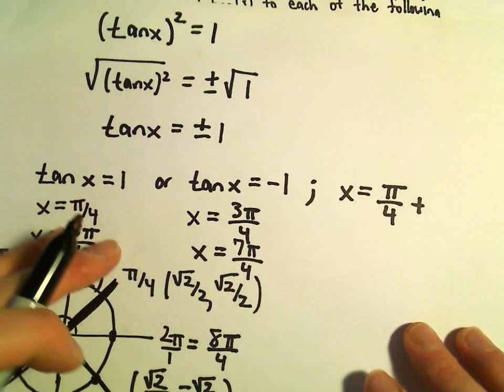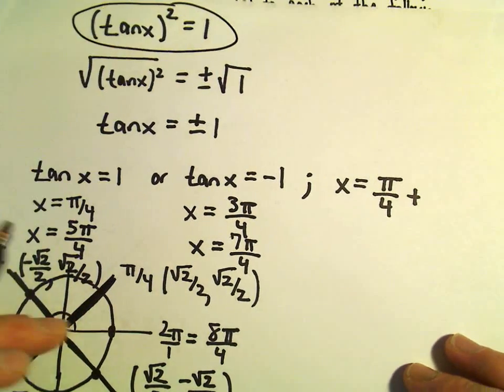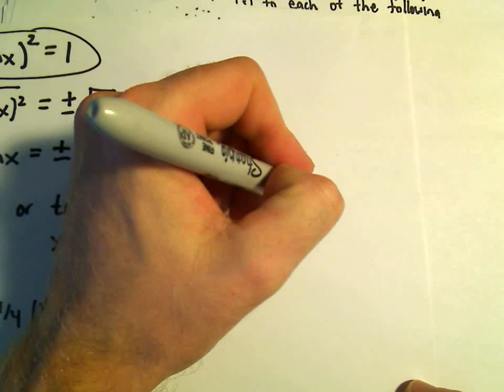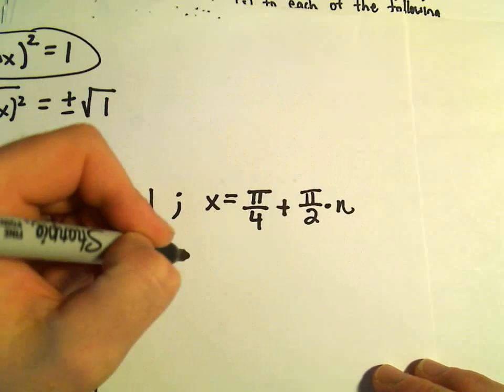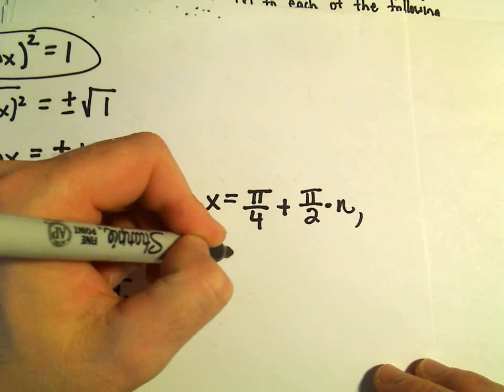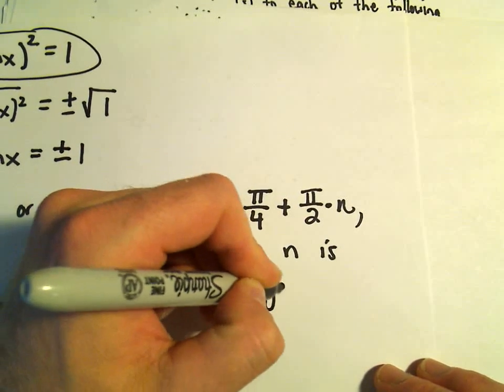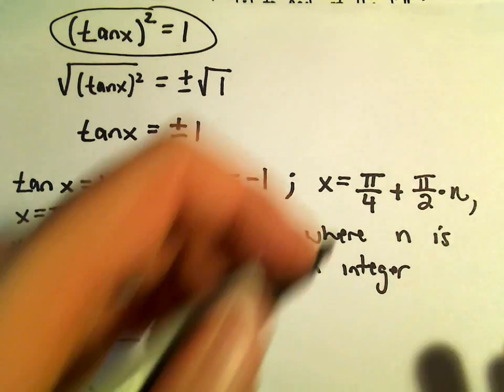We can say solutions to that equation would be x equals pi over 4, and then we could write plus pi over 2 times n, where n is an integer. So just a more compact way of writing all the solutions.